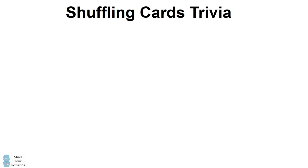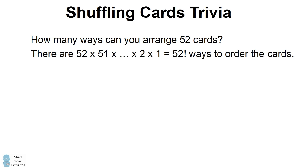So we'll get started by asking how many different ways are there to arrange 52 cards? You can arrange them in 52 factorial different ways, which is approximately 8 times 10 to the power of 67.